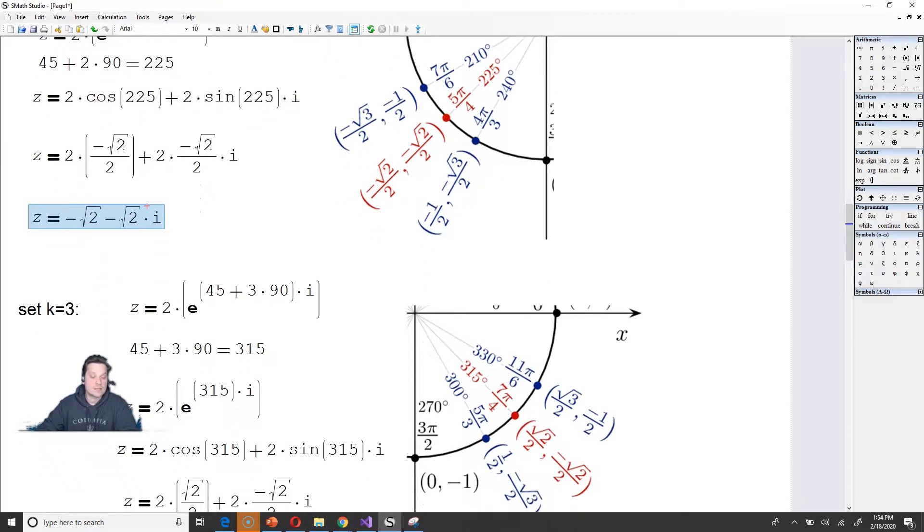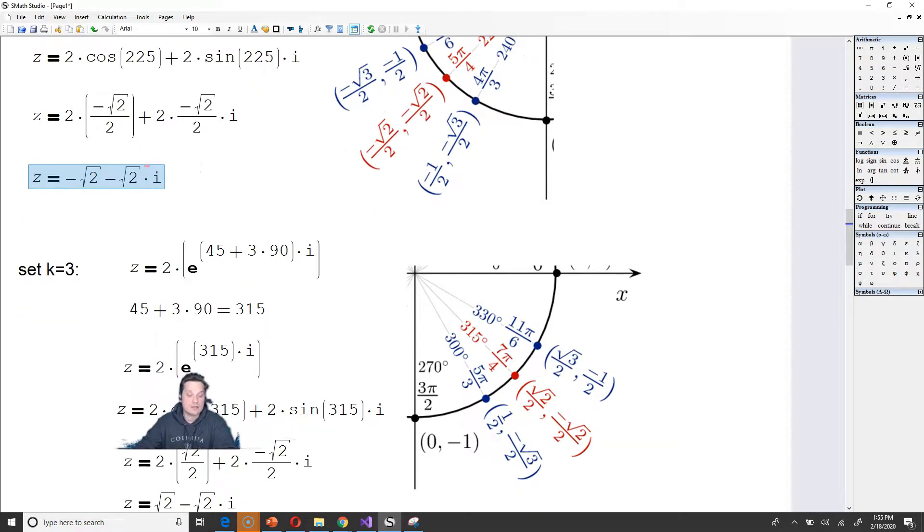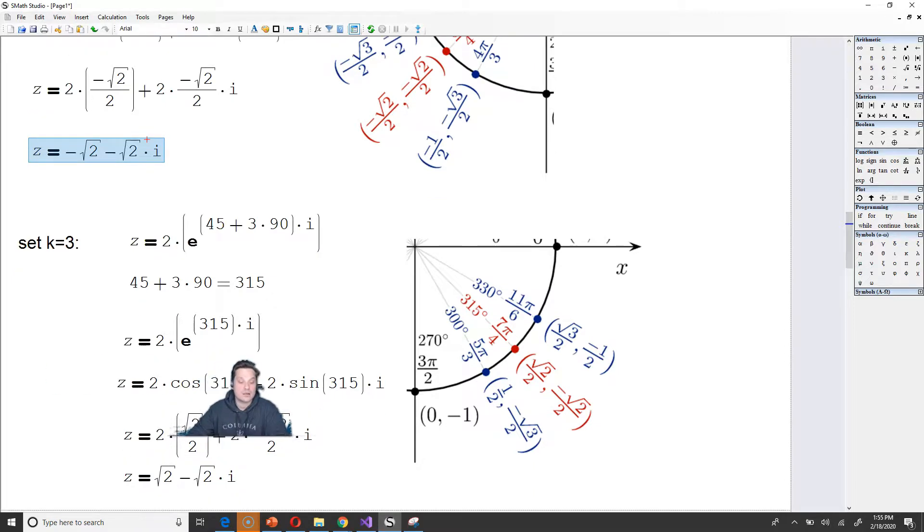Continue. Set k equal to 3 at the last step. So you'll have z equals 2 times e to the 45 plus 3 times 90i. 3 times 90 plus the 45 altogether, 315 degrees. So that's going to be equivalent to 2 times e to the 315 times i. So it's 2 times cosine of 315 plus 2 times sine of 315i. But now in the unit circle, 315 degrees is 7pi over 4 radians. So you have the root of 2 over 2 and negative root of 2 over 2.